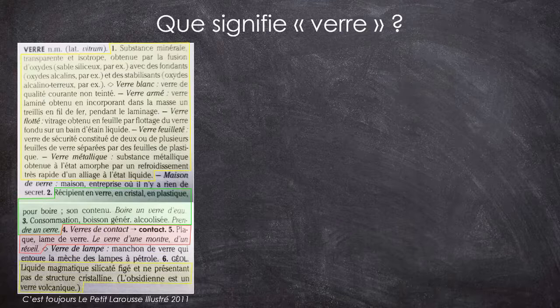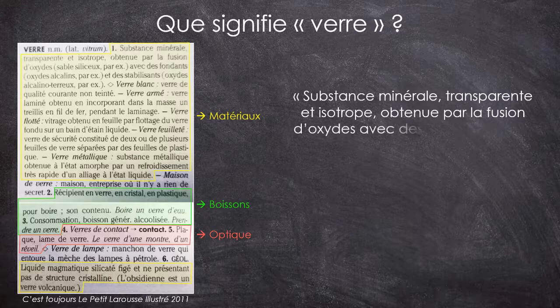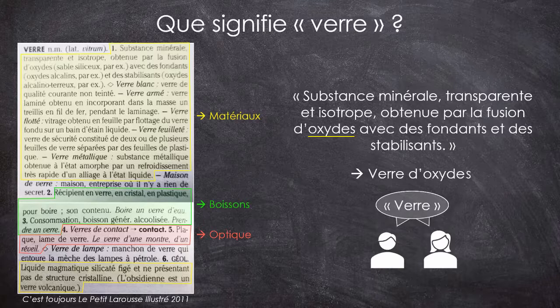Vous vous en doutez puisque c'est le thème de cette chaîne, la définition qui nous intéresse est celle du matériau. On nous définit le verre comme étant avant tout une substance minérale transparente et isotrope, obtenue par fusion d'oxyde avec des fondants et des stabilisants. C'est une excellente définition de ce qu'on appelle un verre d'oxyde, ce que monsieur et madame tout le monde appellent le verre. Mais avant de crier victoire en se disant qu'on a notre définition, j'aimerais attirer votre attention sur un point. Le dictionnaire fait mention de verre métallique, ce qui ne colle pas trop avec ce qui est censé être un verre. Parce que déjà, un métal, ce n'est pas transparent, et ce n'est pas directement obtenu en faisant fondre des oxydes.